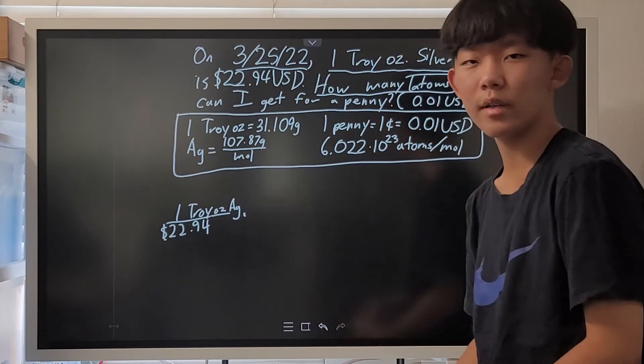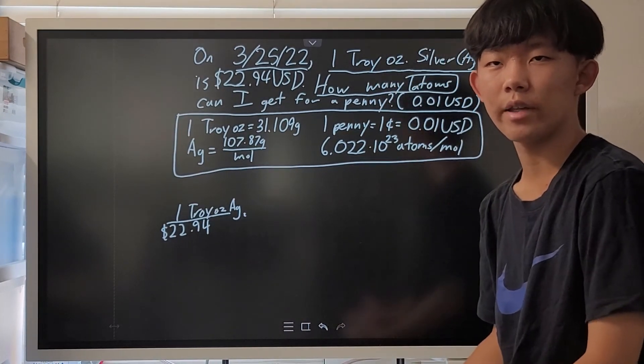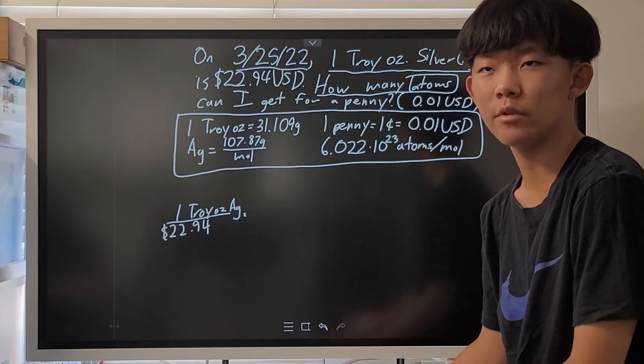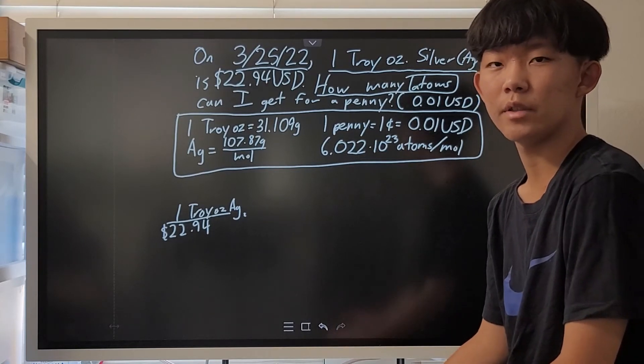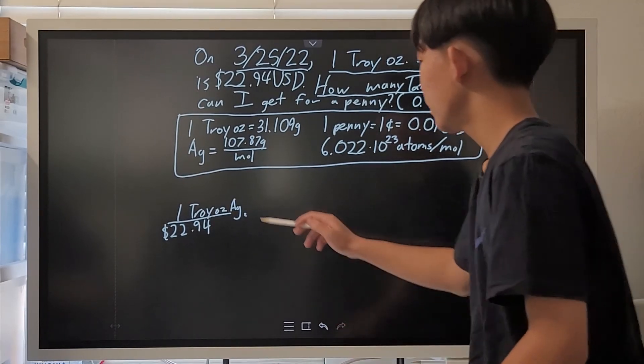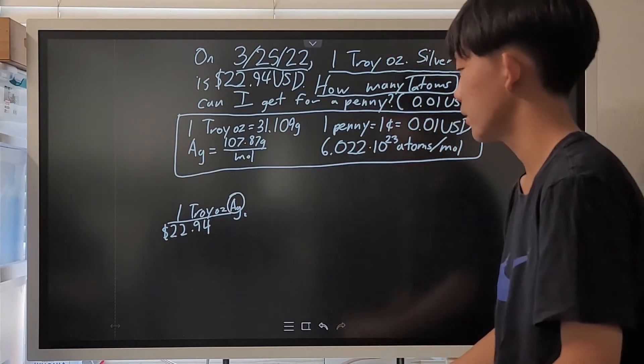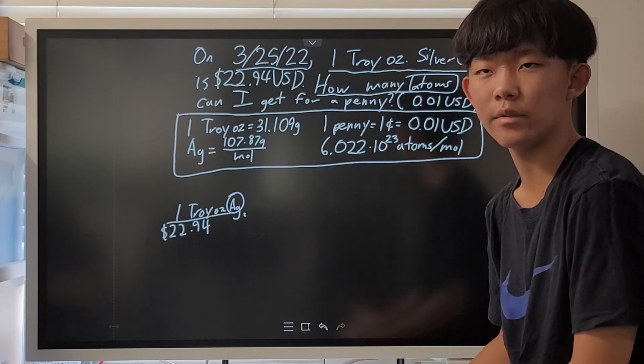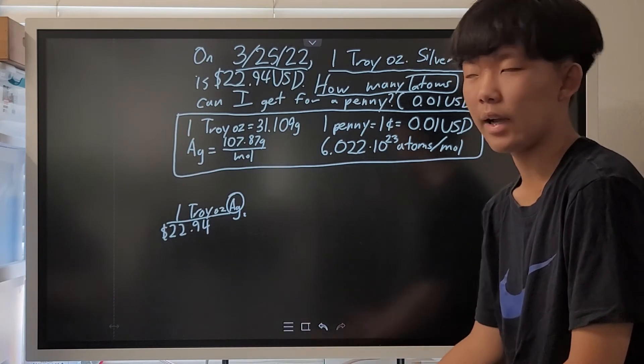Now, some of you guys might find it absurd that I can actually convert a weight quantity into atom quantity, but it's actually very much possible as long as you have a pure substance. Here, the silver is assumed to be pure, so you can actually convert the weight of the silver into the number of atoms.